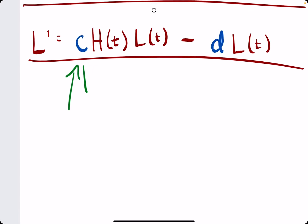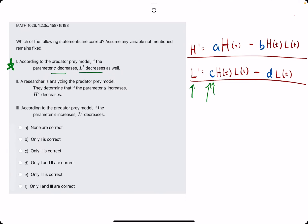If C, this value here, goes down and C is positive on the outside, if C goes down, then this overall value will go down and that overall value is L'. And so, to say if C decreases, then L' decreases as well must be true.